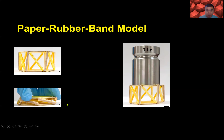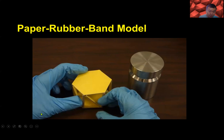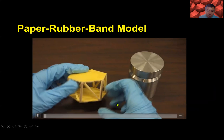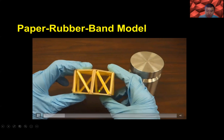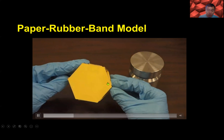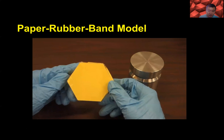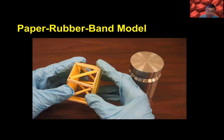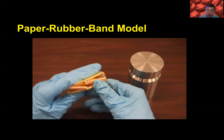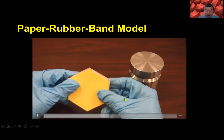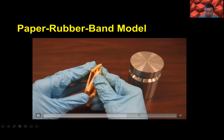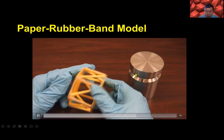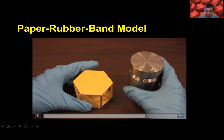We can also use a paper and rubber band model to build the structure. This paper-rubber band model can be twisted to collapse and autonomously deploys. It can also bear load — you can just put a weight on it.